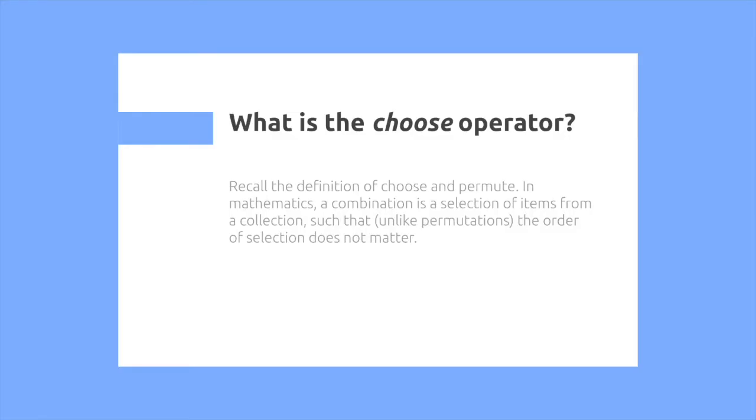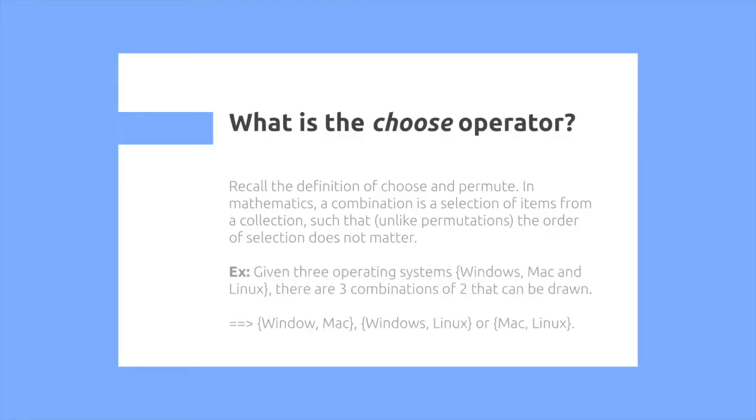In mathematics, a combination is a selection of items from a collection, such that, unlike permutations, the order of selection does not matter. For example, given the three operating systems Windows, Mac and Linux, there are three combinations of two that can be drawn: Windows and Mac, Windows and Linux, or Mac and Linux.